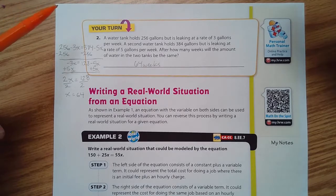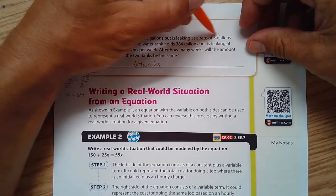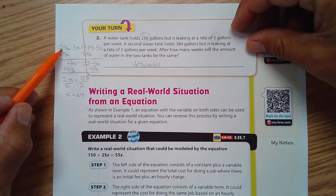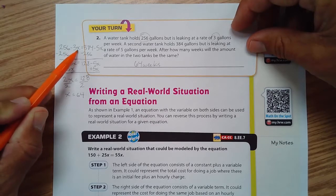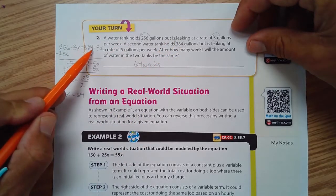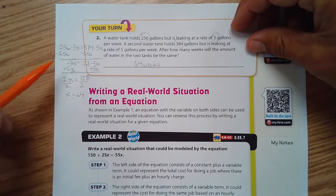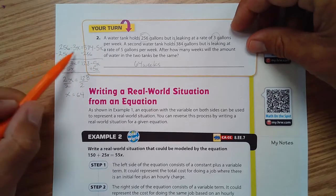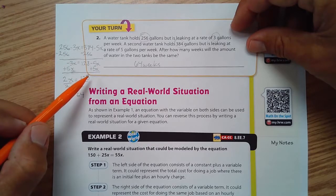I made two different expressions and set them equal to each other. 256 gallons leaking at three gallons per week means it starts at 256 and you subtract three gallons per week, so x is the number of weeks. The other one starts at 384 and subtracts five gallons per week—it's leaking out.